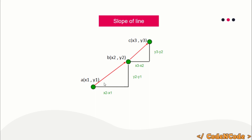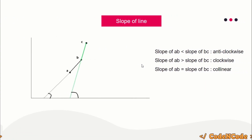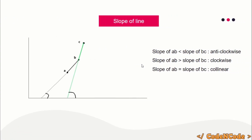If you are given two points, the slope of the line passing through those two points is (y2 - y1) / (x2 - x1). So the slope of line AB would be (y2 - y1) / (x2 - x1), and similarly the slope of line BC would be (y3 - y2) / (x3 - x2).